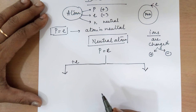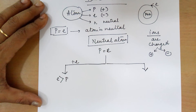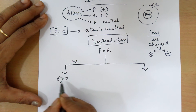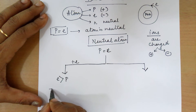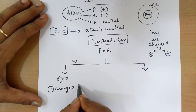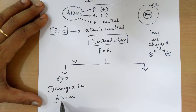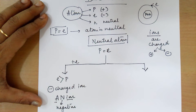If there is a gain of electron, in that case the number of electrons is going to be more than the number of protons. The negatively charged ions are more than the positively charged ions. Hence, we end up in a negatively charged ion called an anion. A negative ion is an anion.